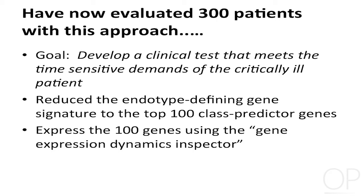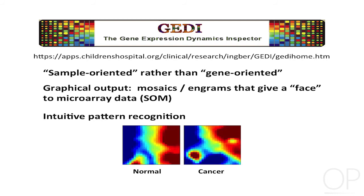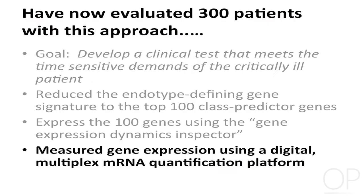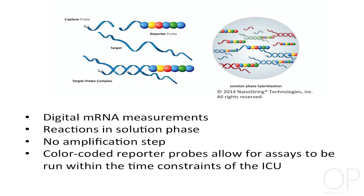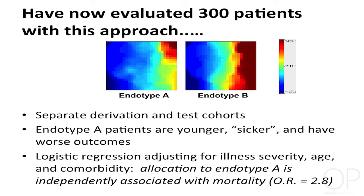On the left is normal, on the right is cancer — and without knowing the genes, you can tell they're different. We're also measuring gene expression using a multiplex mRNA quantification platform that gives a digital readout, based on standard hybridization of nucleic acids using reporter and capture probes to generate a count of mRNA expression. This can be done in solution phase with no amplification such as PCR.